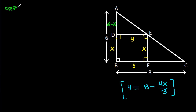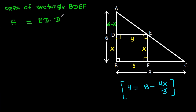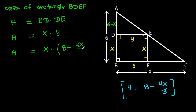Now, the area of rectangle BDEF, suppose A, equals BD times DE. So A equals X times Y, and substituting Y gives A equals X times (8 minus 4X over 3). Therefore, A equals (8X minus 4X squared) over 3.